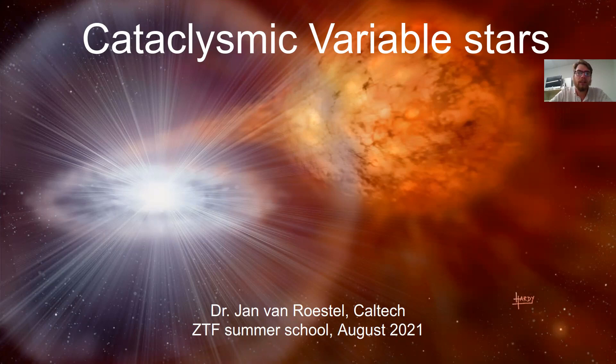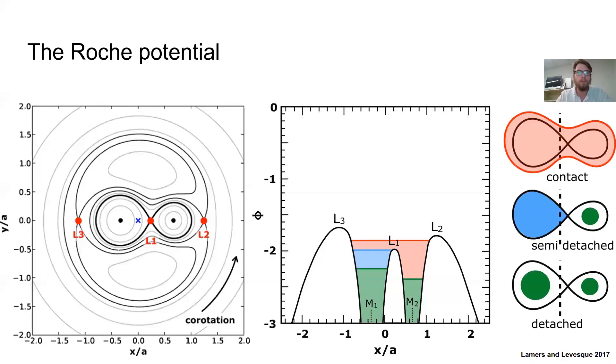Hello everyone, I'm Jan van Roestel. I'm a postdoc here at Caltech, where I work with the Zwicky Transient Facility to study all kinds of variable stars. I'd like to talk about cataclysmic variable stars here, giving an introduction on a typical example and discussing some more exotic variants at the end of my talk.